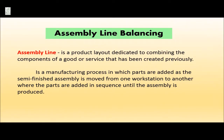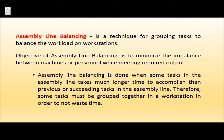Assembly line balancing is a technique for grouping tasks to balance the workload across workstations. An assembly line is a product layout dedicated to combining the components of a good or service, where parts are added as the semi-finished assembly moves from one workstation to another until the assembly is finished. The objective of assembly line balancing is to minimize the imbalance between machines or personnel while meeting required output, particularly when some tasks take much longer than others.